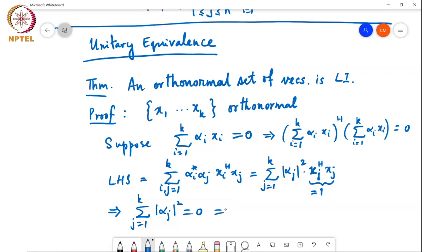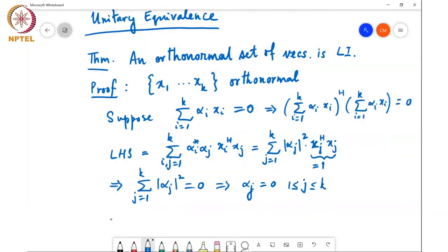So this means that sigma j from 1 to K mod alpha_j squared equals 0, which is only possible if alpha_i equals 0 for alpha_j equals 0, 1 less than or equal to j less than or equal to K. OK, so which means that X1 to XK are linearly independent.